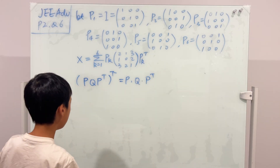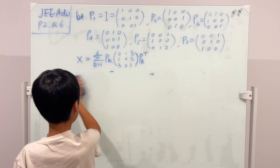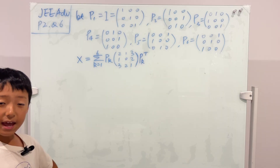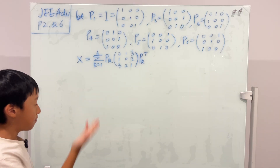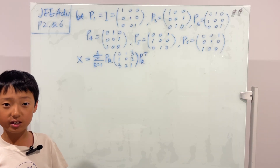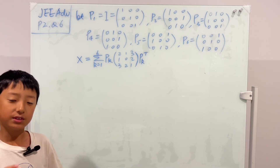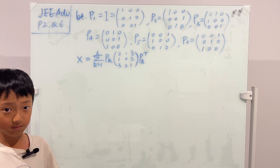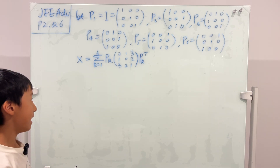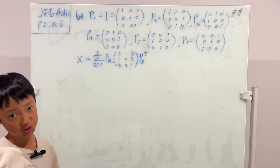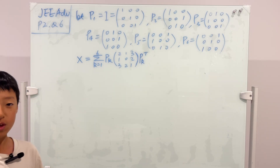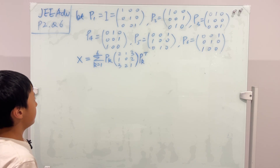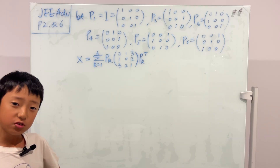So this expression inside is symmetric, and if you add symmetric matrices together you still get a symmetric matrix. That gives us answer D: X is a symmetric matrix. We have proved D.